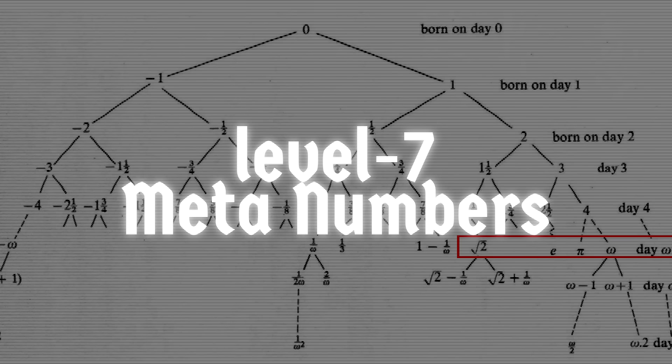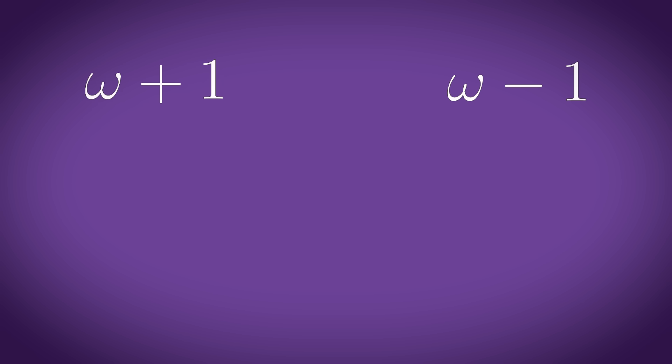Level 7: meta numbers. Using the surreal number set, you can create numbers like infinity plus 1, infinity minus 1, or even 1 over infinity — which is the smallest number that exists greater than zero. Infinity here is represented by the omega symbol, which is a number that comes after all the previous natural numbers.